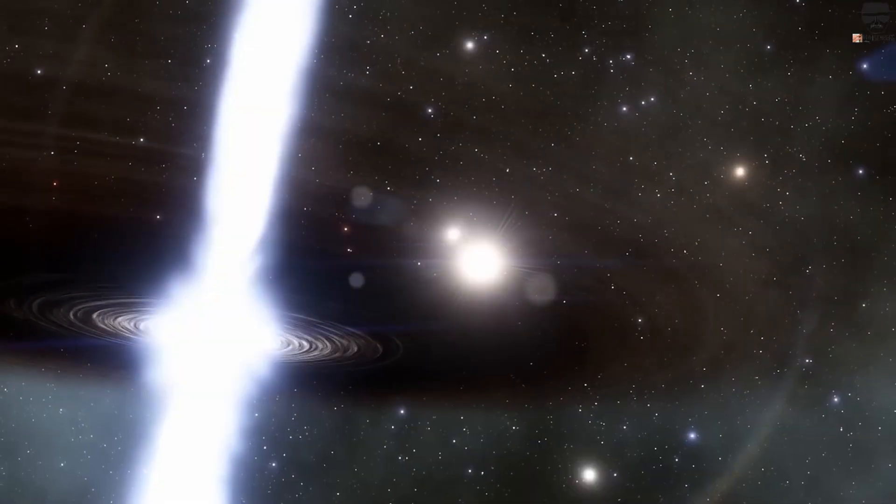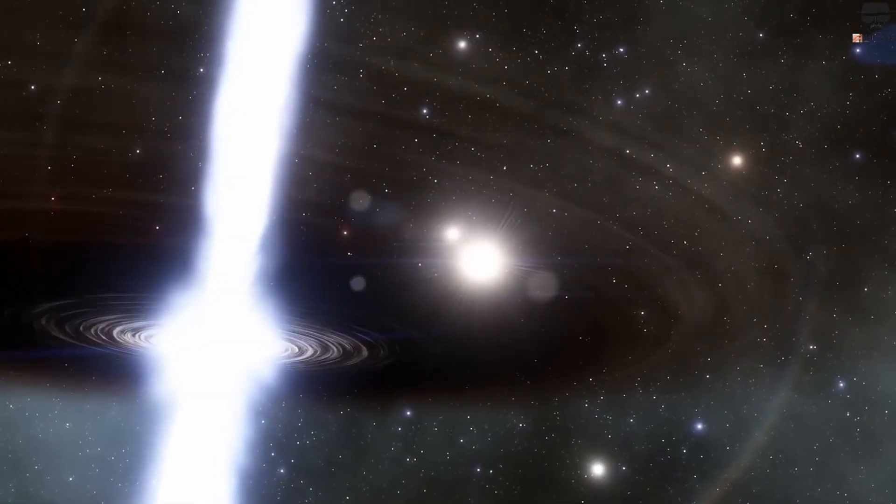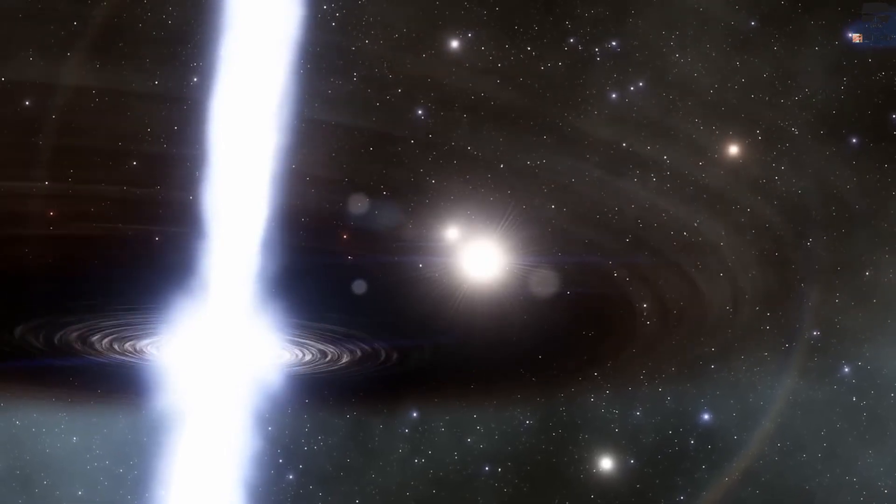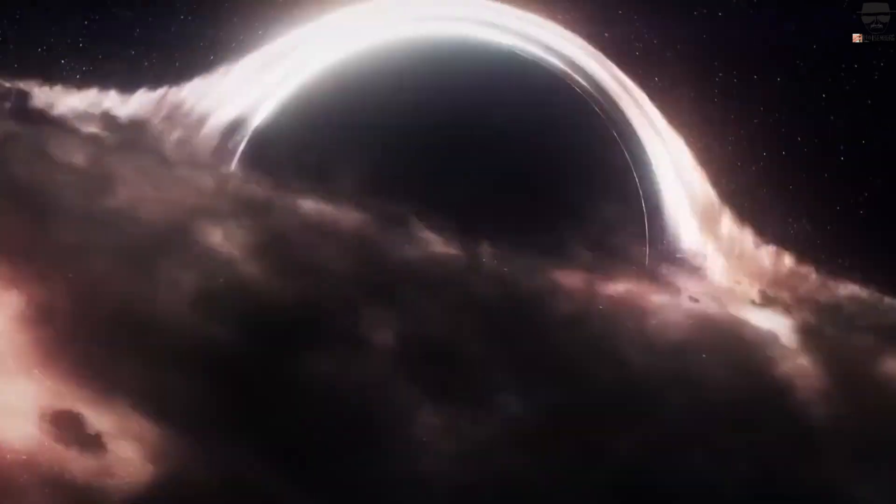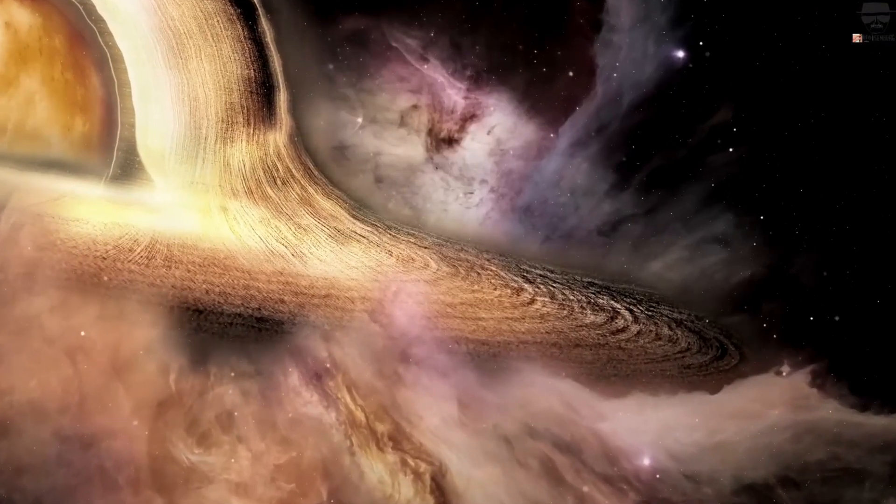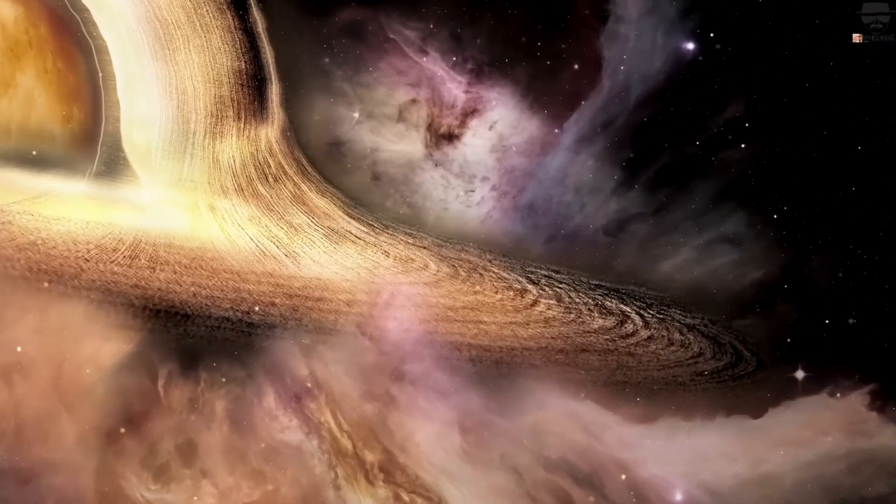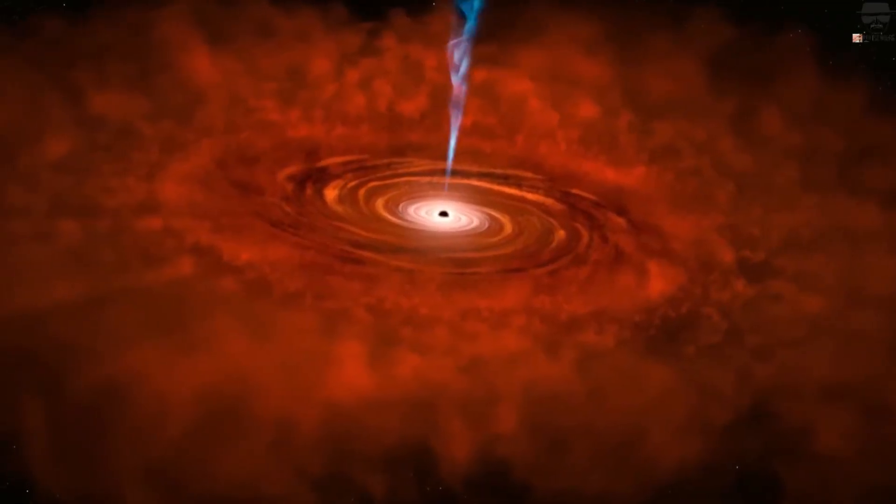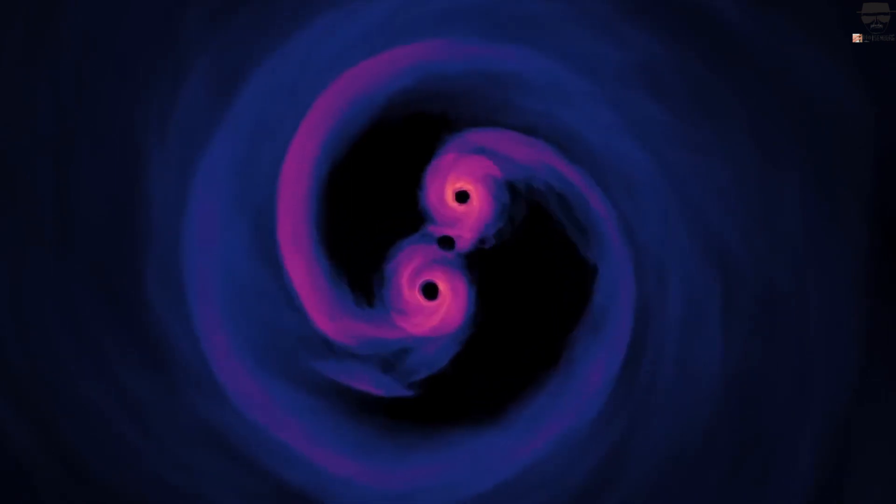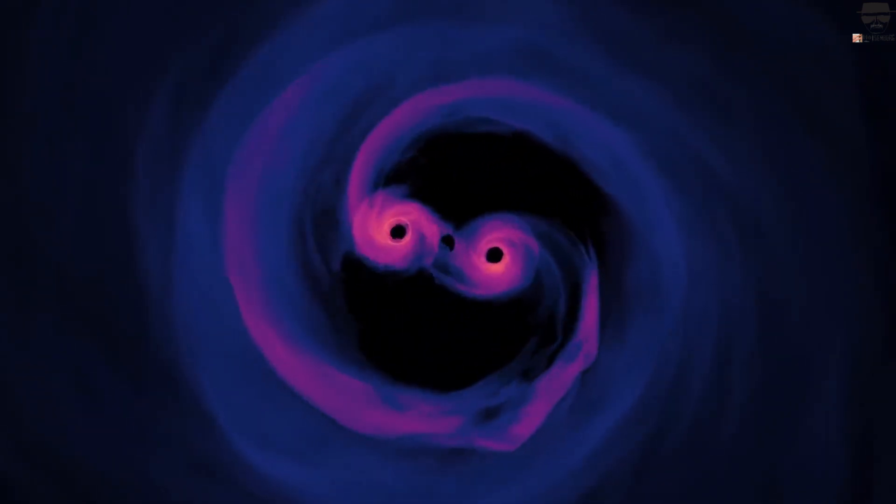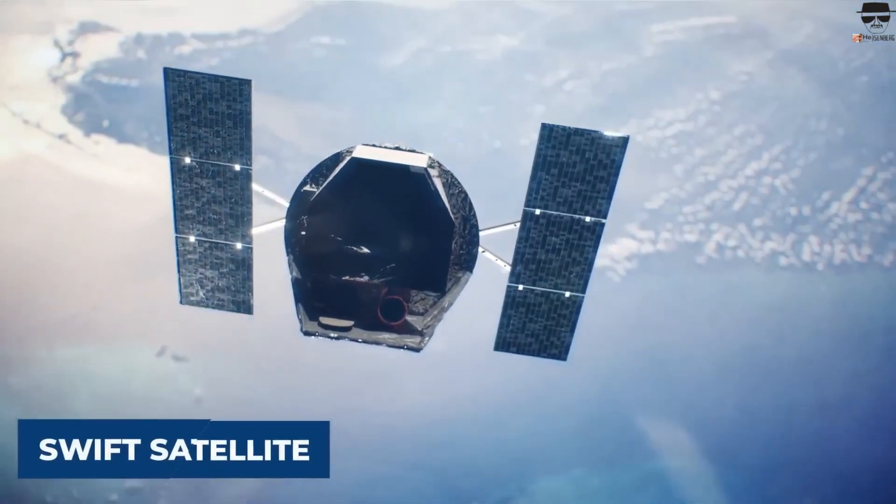This means that black holes become white holes almost instantly they form. But as outside observers, we continue to see a black hole for billions of years because of gravity's time dilation. If this theory is correct, black holes that formed in the early years of the universe could be ready to die and burst into cosmic rays or another form of radiation as any moment which we might have witnessed.